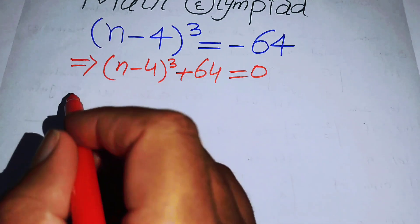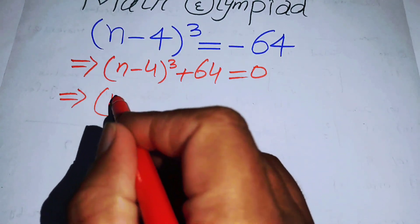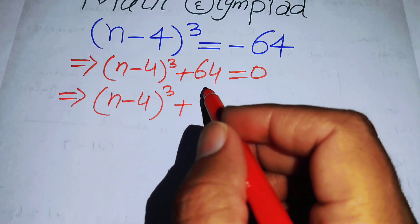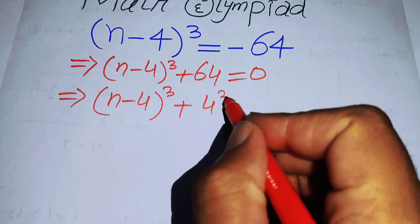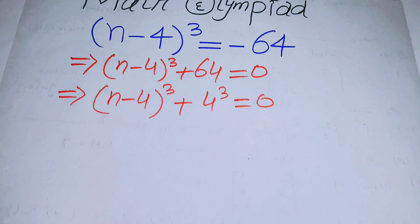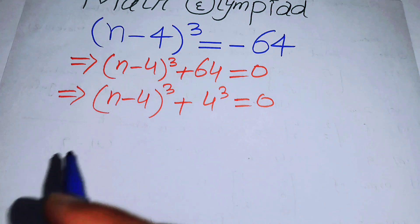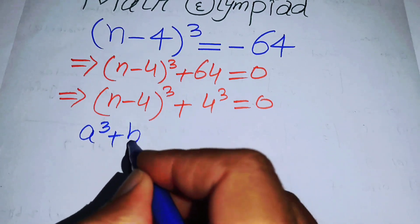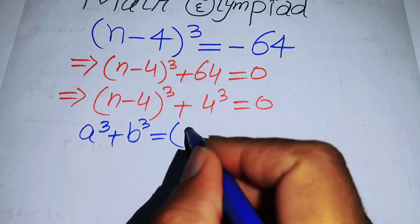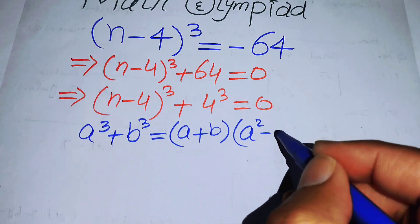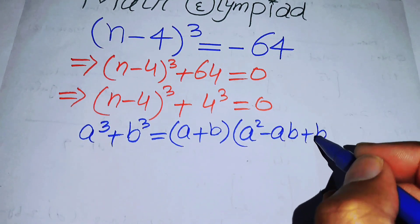We now write this equation as (n - 4)³ + 4³ = 0, since 4³ = 64. In the next step we will use the sum of cubes formula: a³ + b³ = (a + b)(a² - ab + b²).